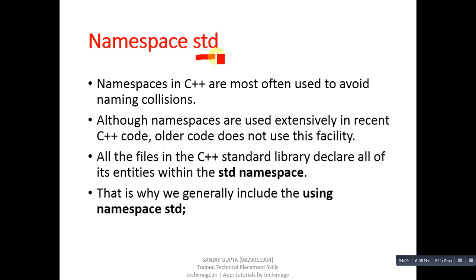Namespaces in C++ are most often used to avoid naming collisions. Naming collision means if we want to use the same names for multiple entities, that same name problem can be avoided with the help of namespaces. Although namespaces are used extensively in recent C++ code, older code doesn't use this facility.